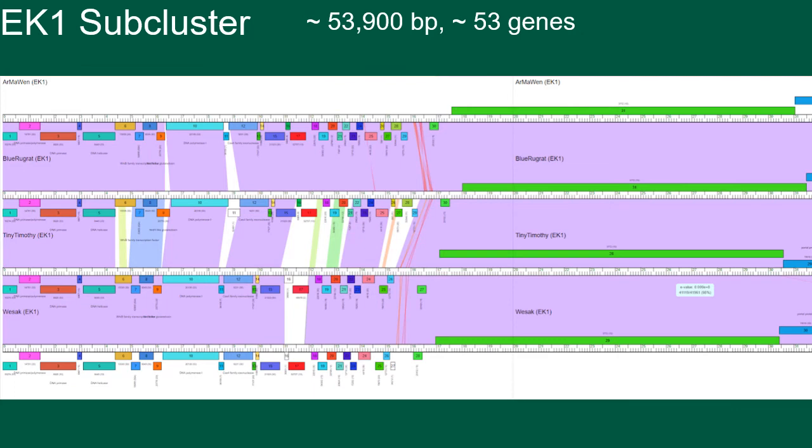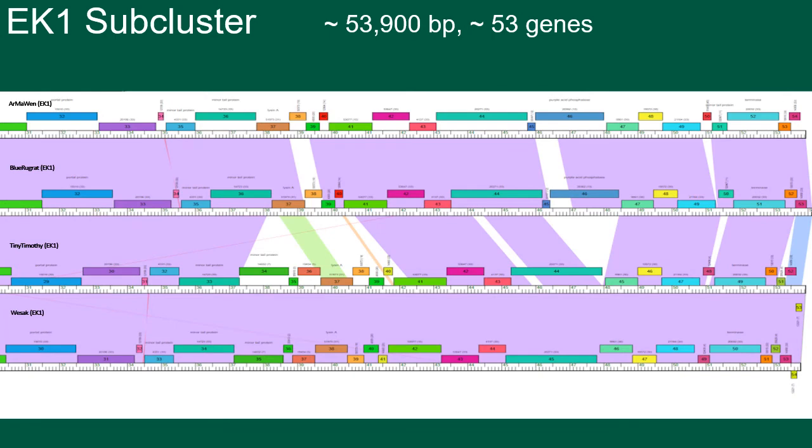However, all of the EK1 phage contain a very large gene located in the middle of their genome, which is conserved throughout the EK1 subcluster. And these high levels of genetic similarity continue throughout the end of the genome as well, with the exception of a few small segments of dissimilarity.